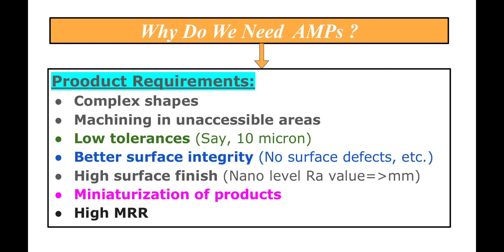Miniaturization of products is another factor that forces the use of advanced machining processes. In older days we used landline phones which are much larger than today's mobiles, yet mobiles have far more capabilities — internet, email — all compacted into a very small size. Similarly, old computers once filled a room but had less memory than today's laptops. This miniaturization requires very small components with different capabilities and different materials.